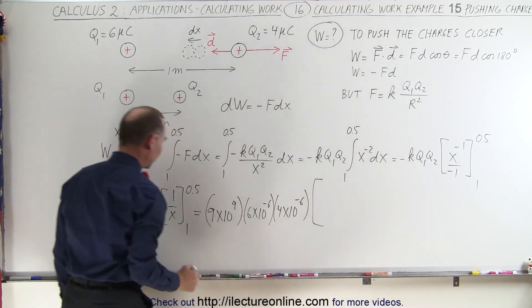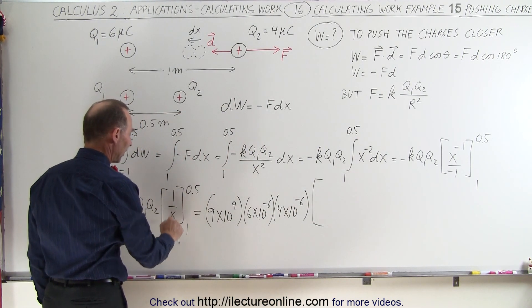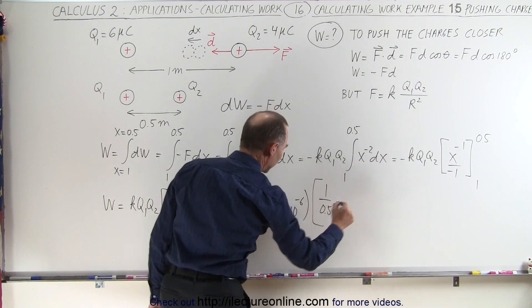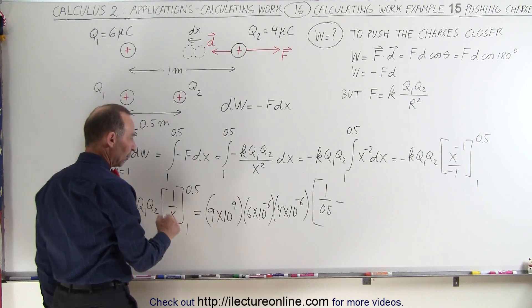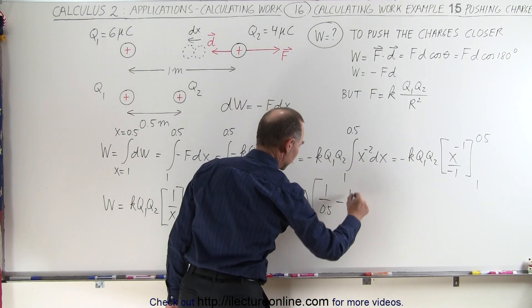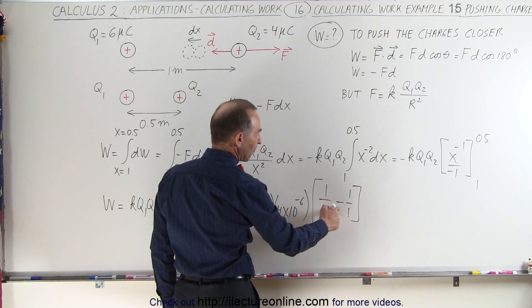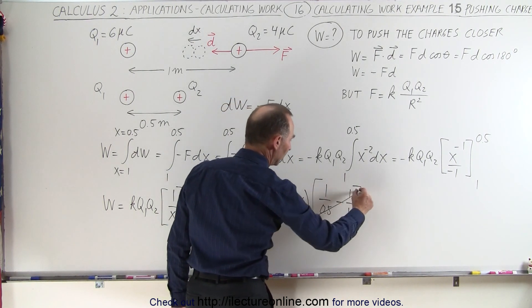And now when we plug in the limits, plug in the upper limit, we get 1 divided by 0.5. Minus, when we plug in the lower limit, get 1 over 1. And of course, 1 divided by 0.5 is 2 minus 1 gives us 1. So this whole thing becomes 1.